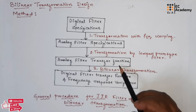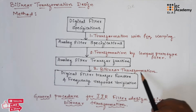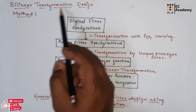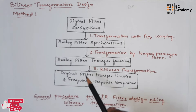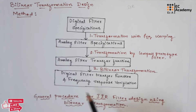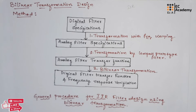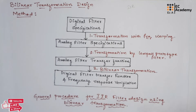Then, the analog filter transfer function is converted into a digital filter transfer function using bilinear transformation. So, we can use bilinear transformation to convert from the analog filter to the digital filter transfer function. Once the digital filter transfer function is obtained, we can easily verify the frequency response of the filter. These are the different steps used to design the IIR filter and verify the frequency response of the filter.